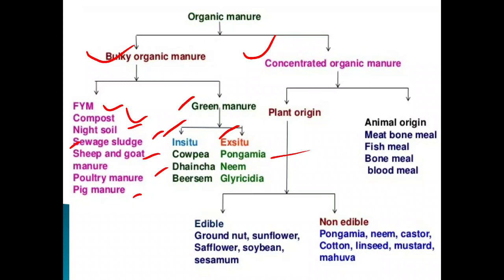Green manure crops: in-situ crops are those cultivated and buried in the same field. Ex-situ green manuring involves crops like Pongamia and currents, where green material is cut and brought to the field. Glyricidia is an example of ex-situ green manure — the leaves and branches are cut and incorporated into the soil.